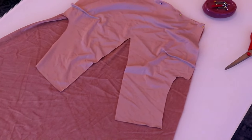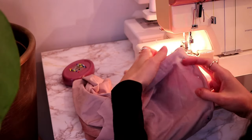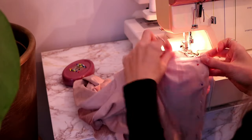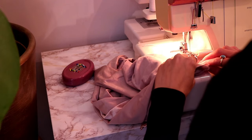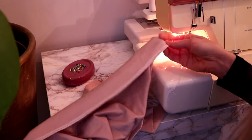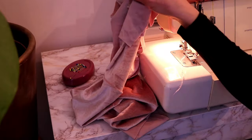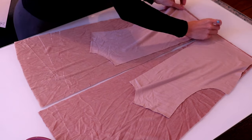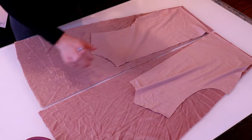Stitch the bust darts along the marked lines on the wrong side of front. Next pin and stitch the front waist seam. Stitch the waist seam on both back pieces.